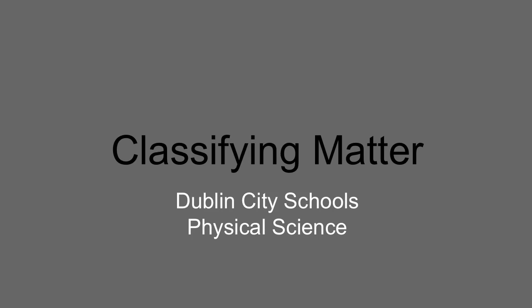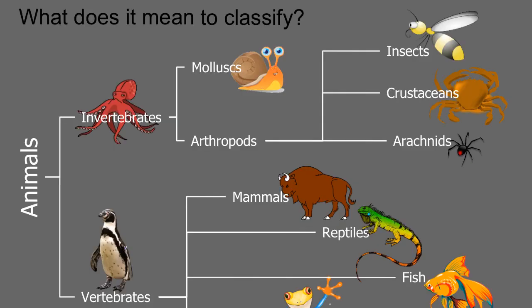Classifying matter means to sort or organize matter into similar groups based on similar properties that they all have. An example of this that is common for people to understand would be how we classify animals. We typically will break down animals into smaller categories to understand how they all fit together and how different animals are related to one another.